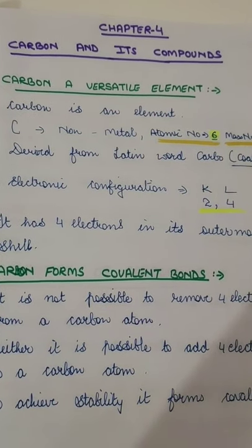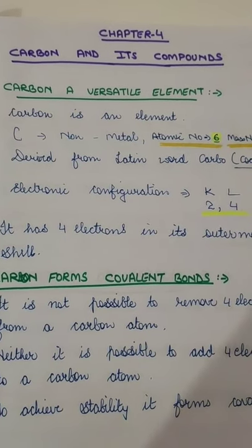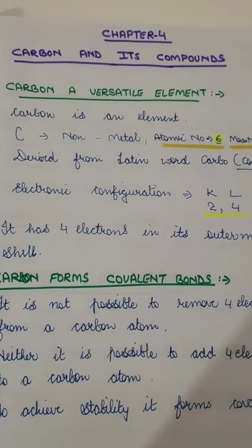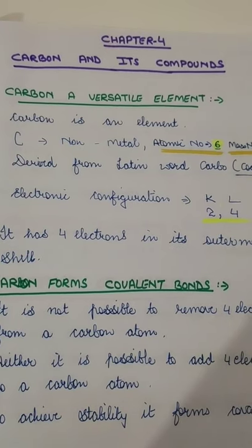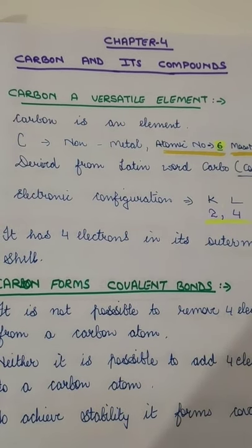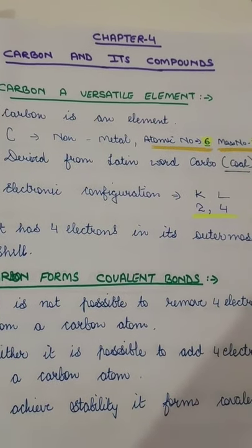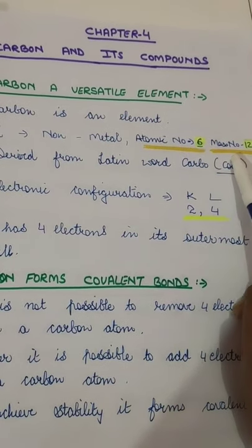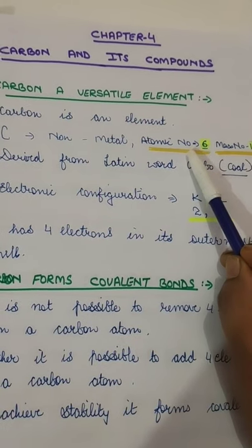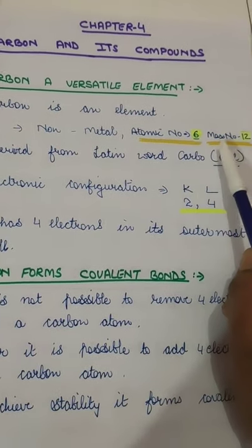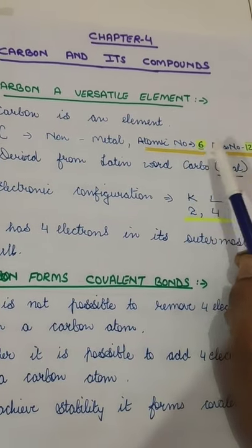Good morning to all the students. Today we are going to start our new chapter of the chemistry portion, that is chapter number 4, Carbon and its Compounds. We have learned about carbon in our previous classes and we know that carbon is an element and a non-metal. It has atomic number 6 and mass number 12. Atomic number is the number of protons in any atom, and mass number is the sum of protons and neutrons.